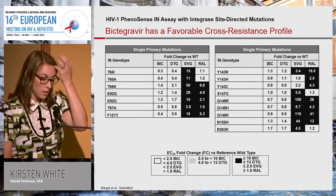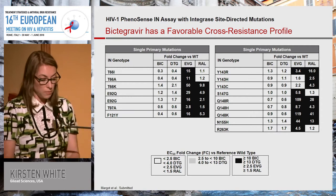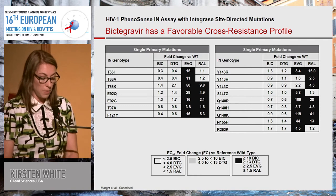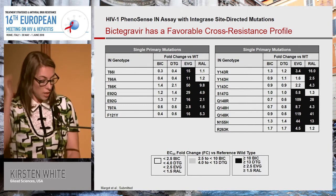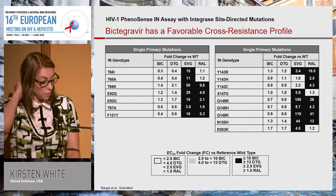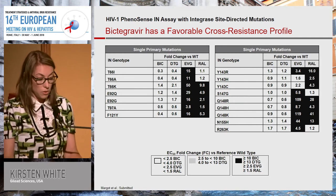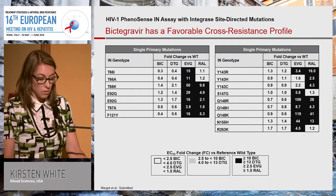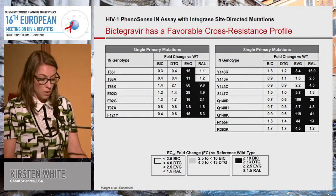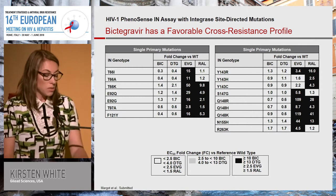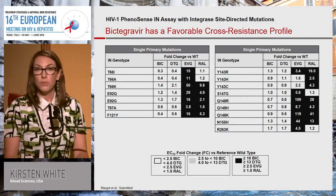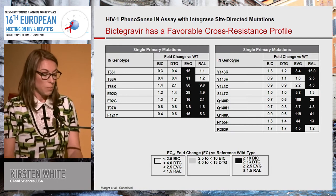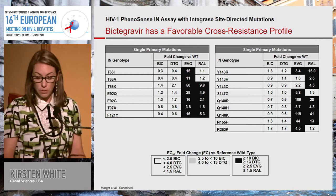The cutoffs: BIC is 2.5 in the assay versus 4.0 for DTG. There's an intermediate fold change of between 2.5 and 10 for BIC, and 4 to 13 for DTG. If it's black, that means it's resistant — greater than 10 for BIC, greater than 13 for DTG. For these primary mutations, there is resistance to EVG and/or RAL for all of them, but both BIC and DTG remain phenotypically sensitive.